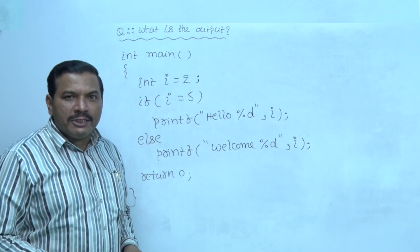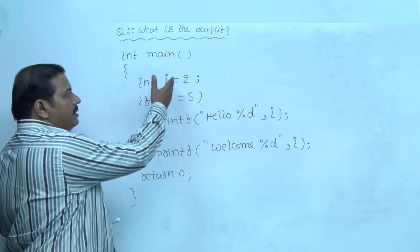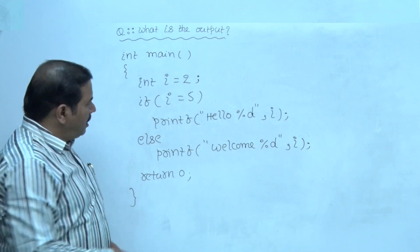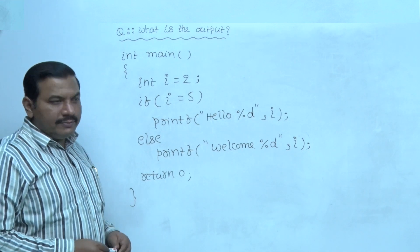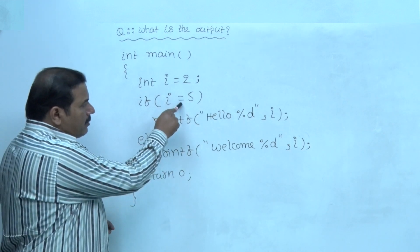This is a conditional control statement if-else. i is a variable and its value given as 2. This is the test expression i assignment 5. Observe clearly here this is single equal to symbol.